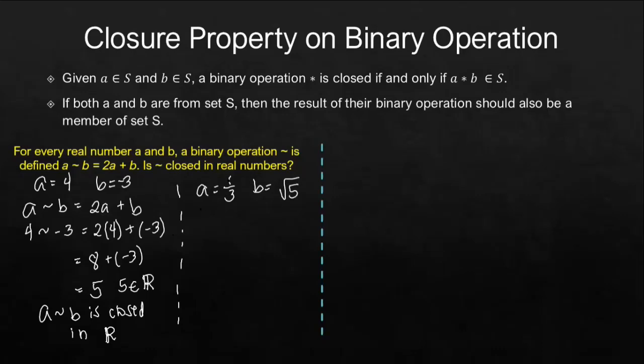Both of them are real numbers. This is a rational and this is an irrational number. So, let's try plugging them in our A tilde B. So, this is 2A plus B. A here is 1 third tilde square root of 5. This is 2 times 1 third plus square root of 5. 2 times 1 third is 2 thirds plus square root of 5.